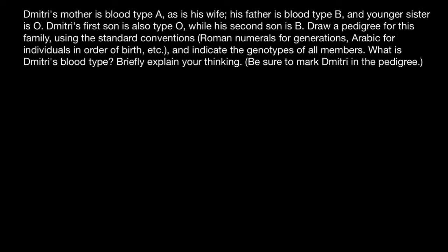Hello and welcome to Nikolai's genetics lessons. Today's problem: Dmitri's mother is blood type A, as is his wife. His father is blood type B and his younger sister is blood type O. Dmitri's first son is also type O.